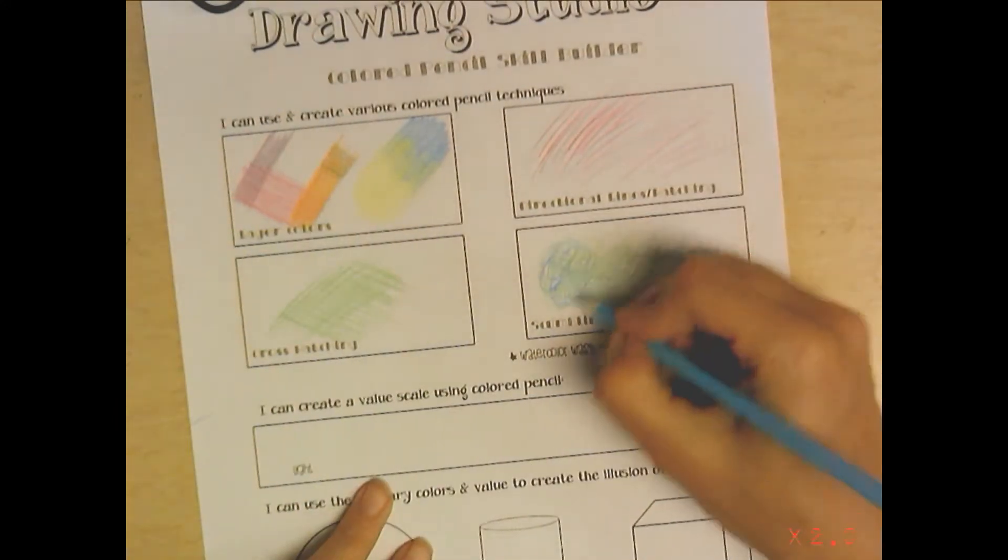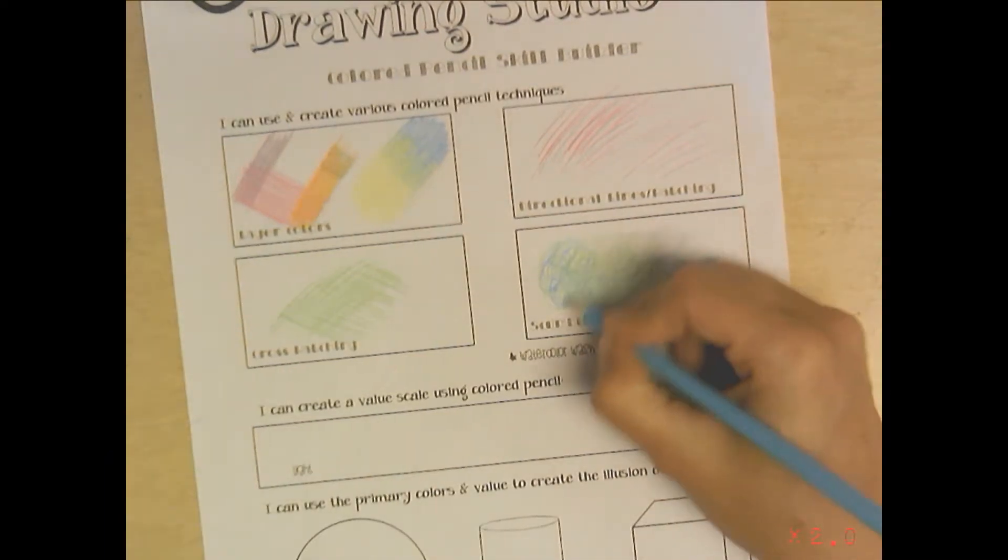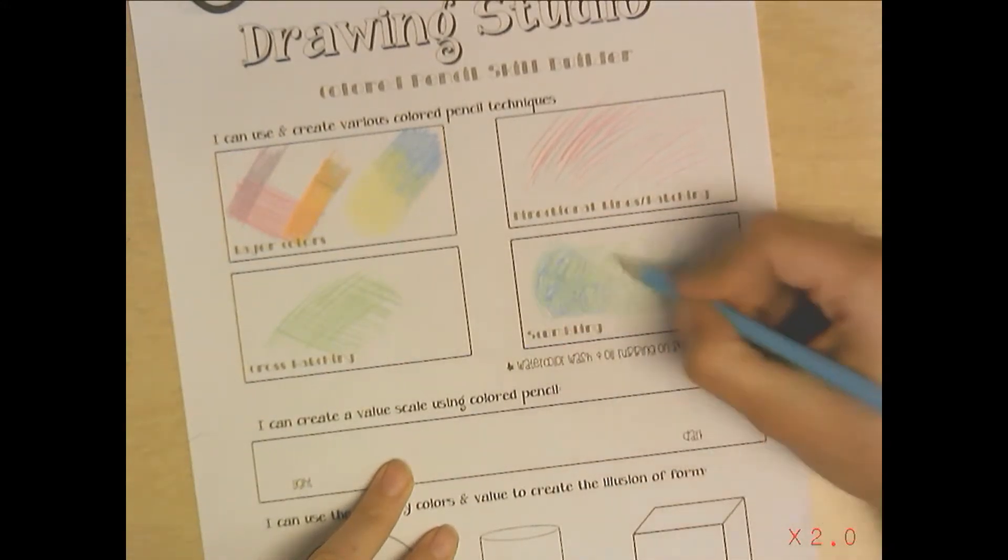Eventually it ends up looking really soft and pretty. I like to scumble like if I'm maybe drawing a landscape and I want to do some trees, you can do a little scumbling. You just play with the depth and the color, experiment and find out how you like it. Good for clouds as well.